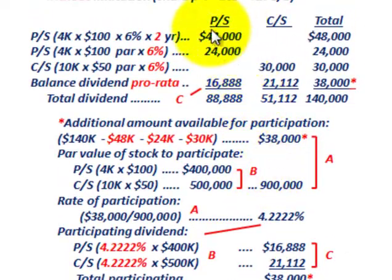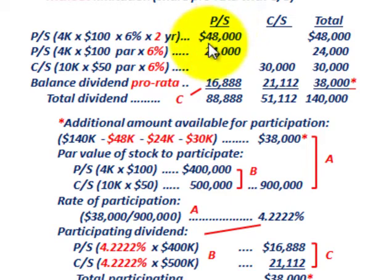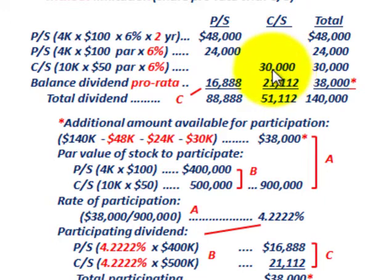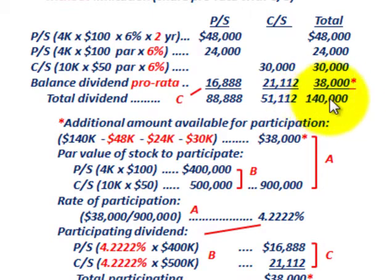Let's go back and look at the total dividend going to preferred stock. Summing the amounts: $48,000 for arrear payments over two years, plus the current dividend payment of $24,000, plus the pro-rata amount of $16,888, gives a total dividend to preferred stock of $88,888. For common stock: the $30,000 base — remember, based on par value times shares outstanding times 6%, the same rate as preferred — plus the pro-rata balance of $21,112, gives a total of $51,112. Summing across, the total retained earnings paid out is $140,000.